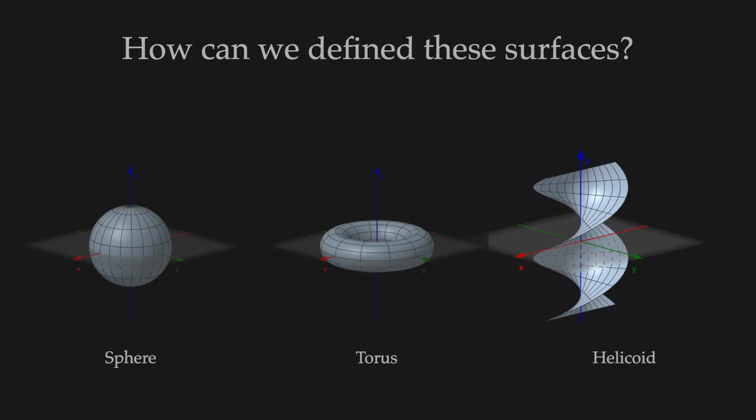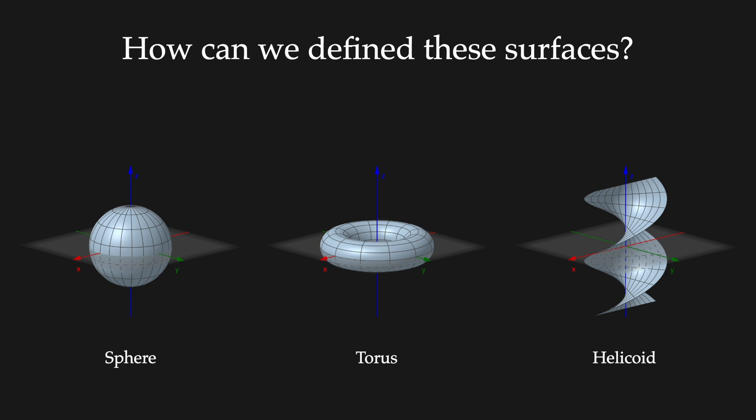To define a function that corresponds to surfaces such as the sphere, torus or helicoid, we need to introduce the concept of parametrization of surfaces.